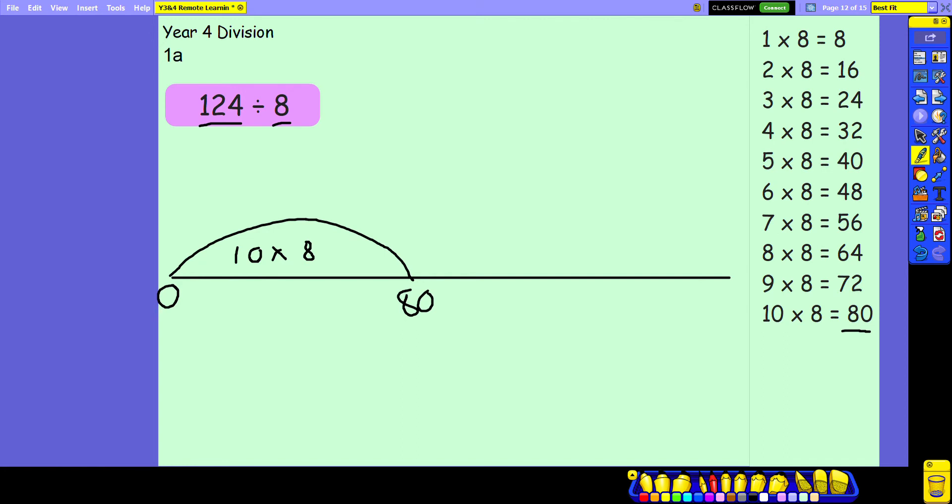Now to get to 124 I can look up another large jump I can take here is 40 which would take me up to 120 and it's worth noting down that that is 5 lots of 8.